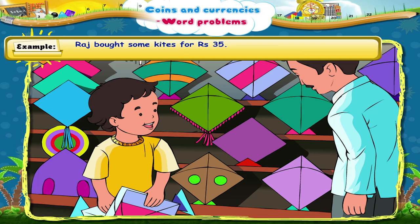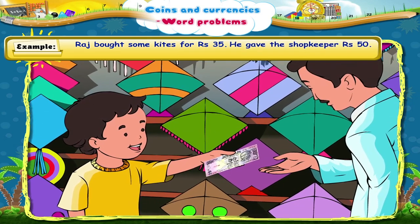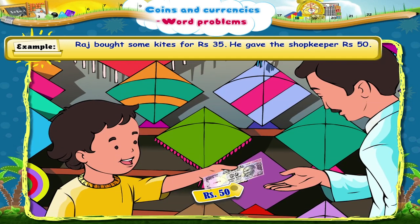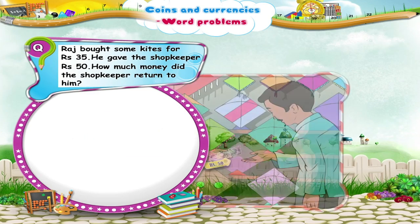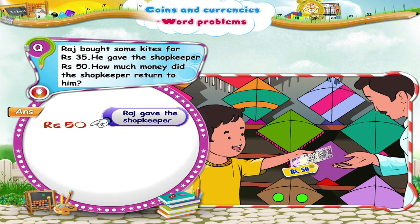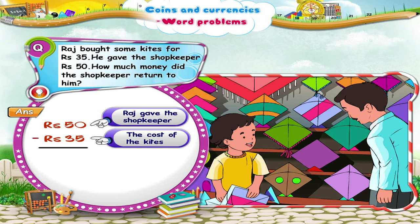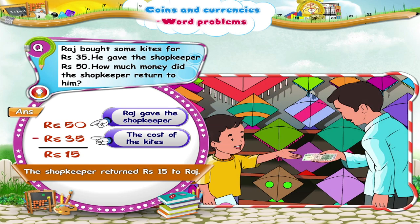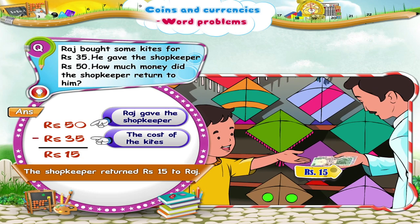Raj bought some kites for rupees 35. He gave the shopkeeper rupees 50. How much money did the shopkeeper return to him? From rupees 50 that Raj gave the shopkeeper, subtract the cost of the kites, which is rupees 35. We get rupees 15. So, the shopkeeper returned rupees 15 to him.